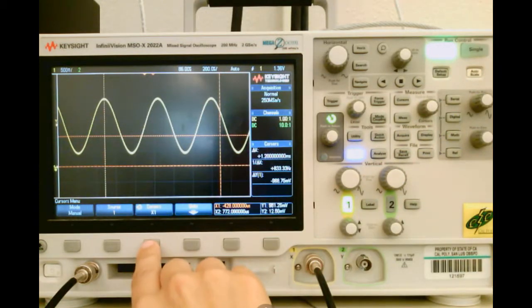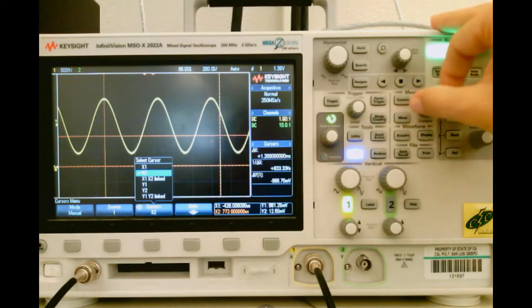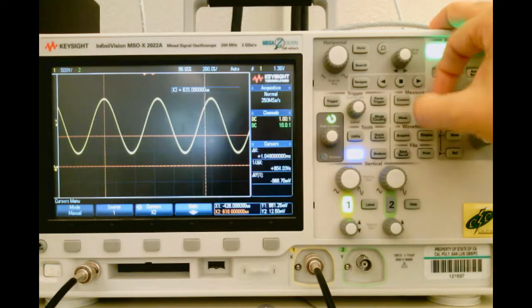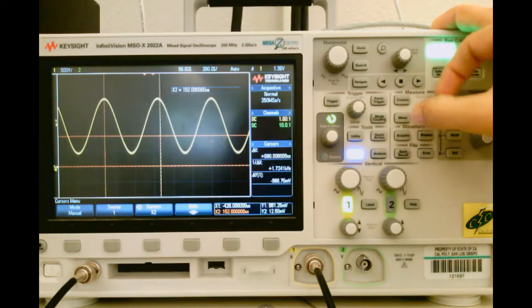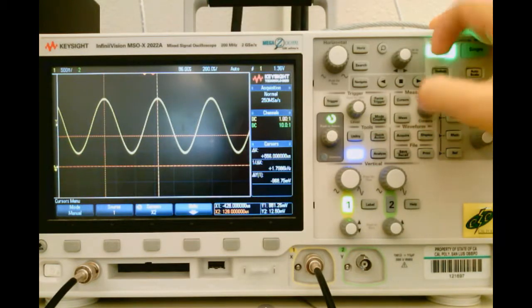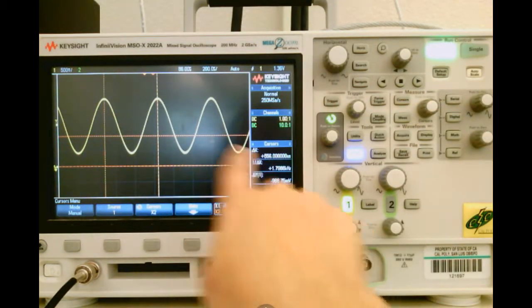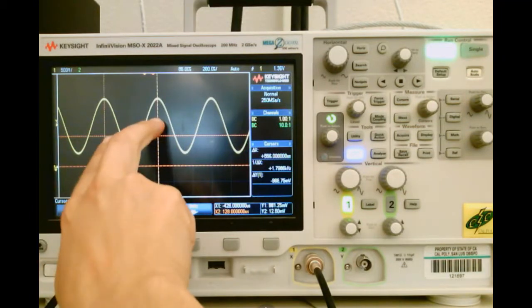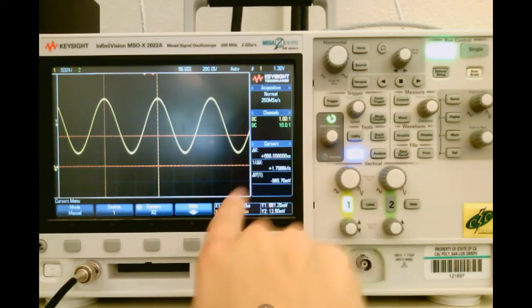Now let's get the X2 cursor to move to the next peak. The difference between the X1 and X2 cursors will now give me the period of my waveform. Looks pretty good. So it says my period, the change in X is 556 microseconds.